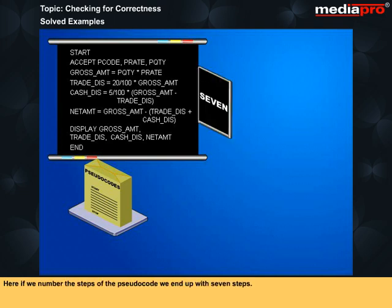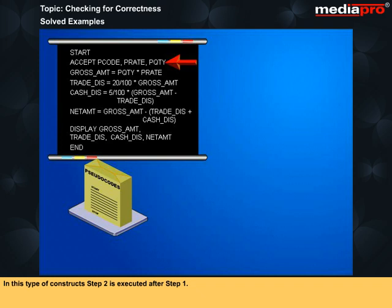Here, if we number the steps of the pseudocode, we end up with seven steps. In this type of constructs, step two is executed after step one, and step three after step one and step two. Nowhere the steps are skipped. The last statement executed is end.